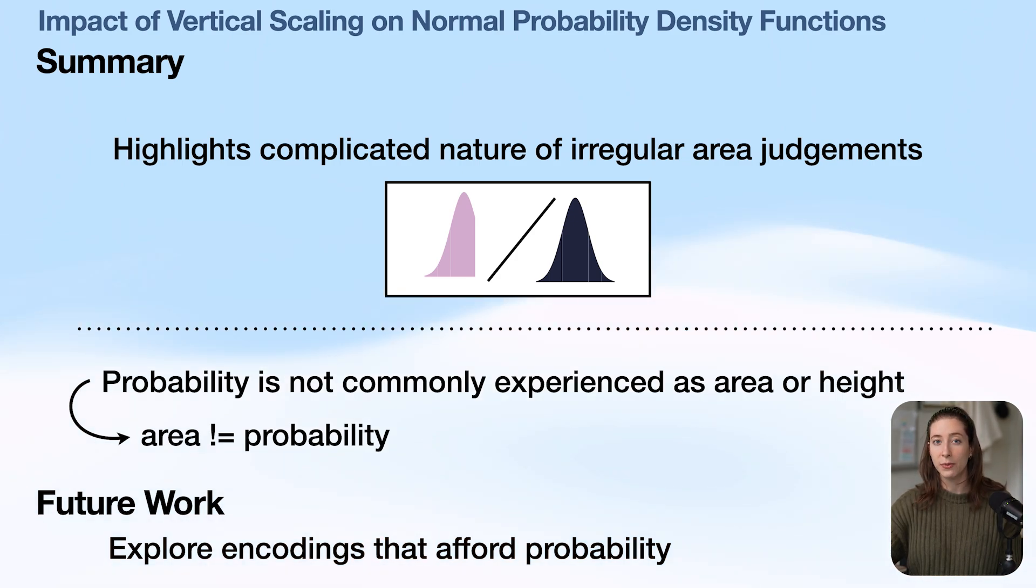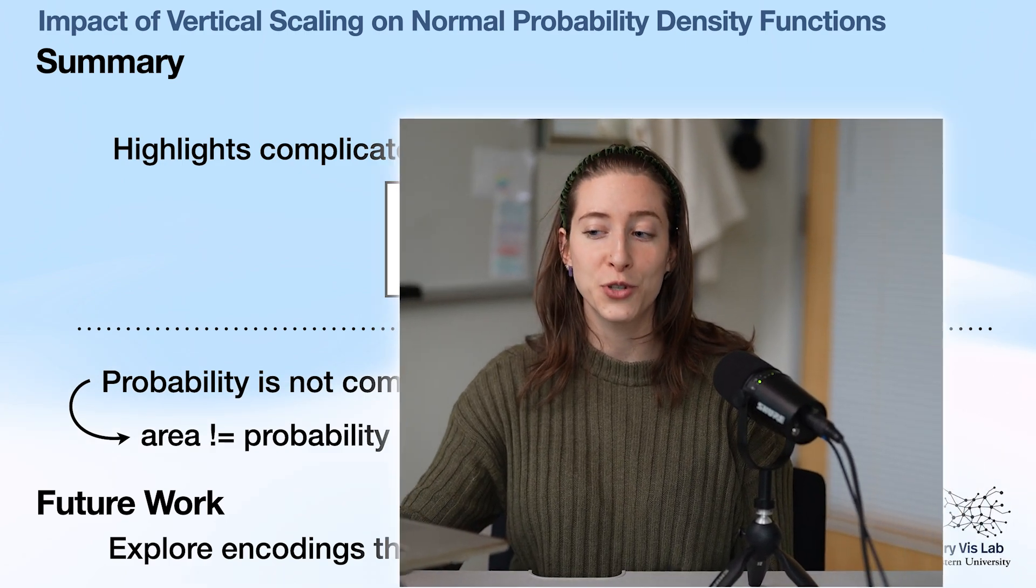Beyond that, when we were developing these experiments, we found it interesting that some of the most common forms of communicating probability did so via area or height, which is not really how we as people experience probability out in the real world. So we think that this work could highlight perhaps a mismatch in affordances between the communication of probability and the things that we're using to communicate. And we think that future work might benefit greatly from exploring encodings that afford probability.